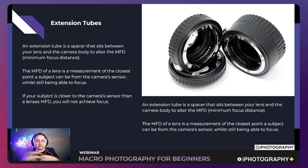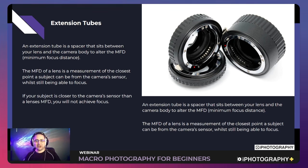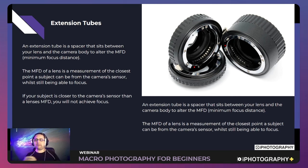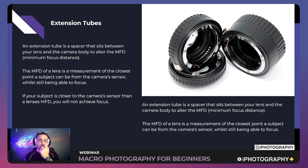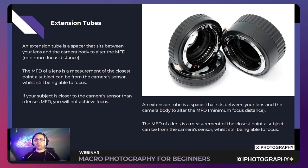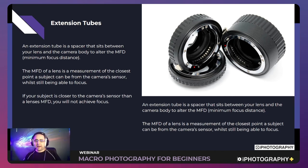Someone mentioned they were struggling using extension tubes with their 100mm macro lens. What could be happening is that the macro lens itself already has a very short MFD — say three or four centimetres. If you add an extension tube that's five or six centimetres thick, the minimum focus point ends up inside the lens itself and it can't focus on what's in front of you. In that case, simply remove the extension tube.